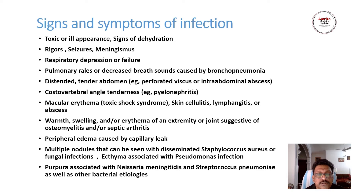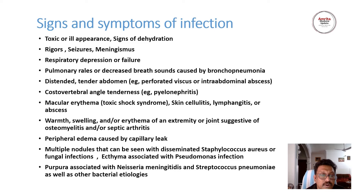Macular erythema indicates toxic shock syndrome. Cellulitis is mainly seen in diabetic patients or patients with elephantiasis who can have skin cellulitis — warmth, swelling, erythema of extremity and joint suggestive of osteomyelitis. Peripheral edema due to capillary leak is not a very reliable sign because many patients presenting with sepsis can have chronic edema due to other conditions. Multiple nodules may be due to disseminated cryptococcal infection. Purpuras can be produced by many bacteria like Neisseria and streptococcal pneumoniae.